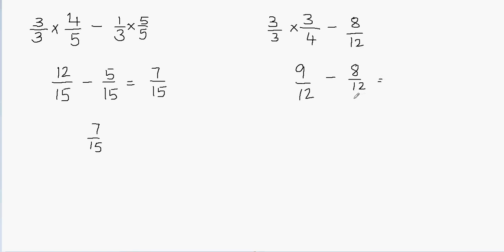Now we have like denominators — the same denominators — so we can just subtract the numerators: 9 minus 8 is 1. You never subtract the denominator, so the answer is 1 over 12. The final answer is 1/12.